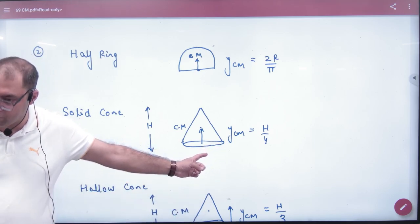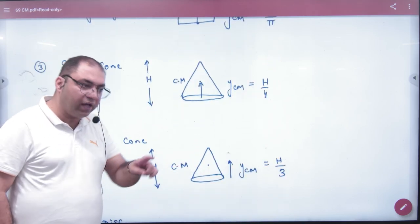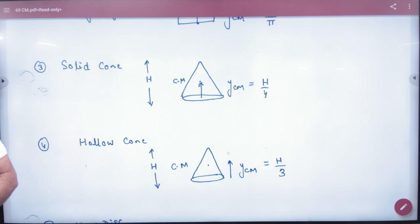So let's write down H by 4. If it is hollow cone, then the distance is H by 3. Solid is H by 4. If it is hollow, then the distance is H by 3.